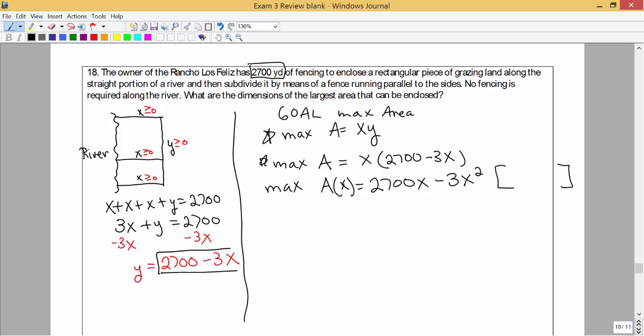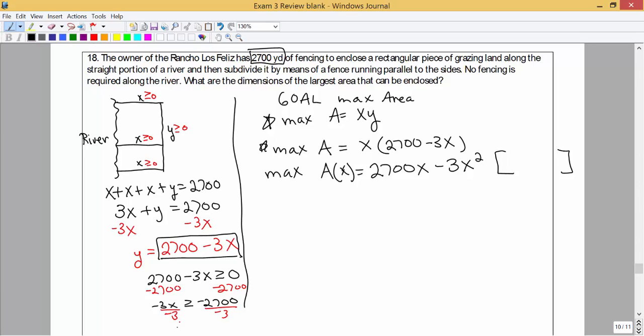So what is the equivalent in terms of x? Well, y is equivalent to 2700 minus 3x. We want this to be greater than or equal to 0. So I'm going to subtract 2700 from both sides. I get minus 3x is greater than or equal to negative 2700. Divide both sides by negative 3. Remember, when we divide by a negative, we have to flip our inequality symbol. So we get that x has to be less than or equal to 900.